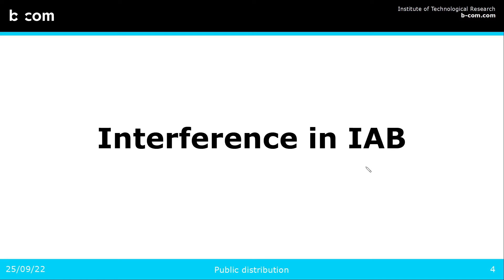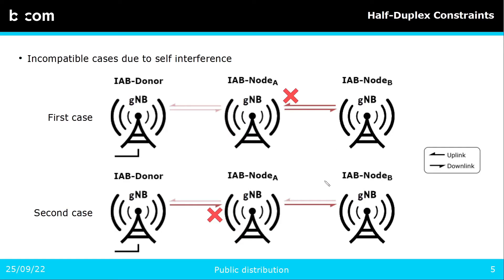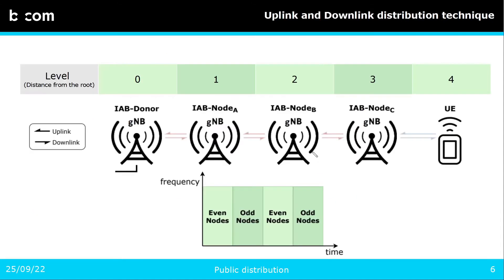IAB implies an increasing amount of radio transmission, so it is necessary to manage interference efficiently. Due to self-interference, gNBs cannot receive while they are transmitting, so we need to operate in half-duplex mode. As an example, when node A transmits, its neighbors cannot communicate with it. In order to transmit information from the donor to UEs with these half-duplex constraints, we take a spanning tree topology, which is the most studied topology in the literature, but the proposed resource allocation algorithm will also work with mesh networks.